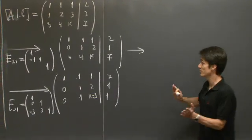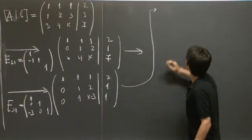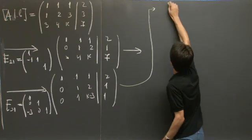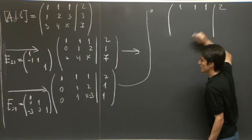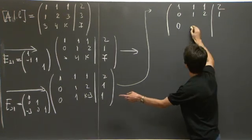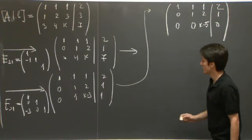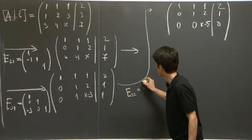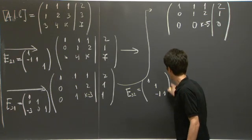We have essentially one last row operation to perform. So we'll subtract the second row from the third one. And we get 1, 1, 1, 2; 0, 1, 2, 1; 0, 0, k minus 5, and then 0. And this was achieved by the elementary matrix E32, which was 1, 1, 1, 1, and then negative 1. Because we multiplied the second row by negative 1 and added it to the third one.